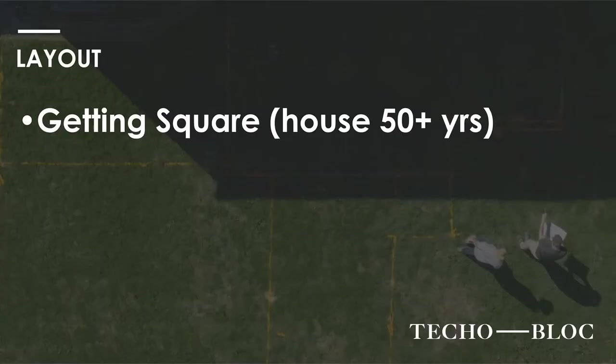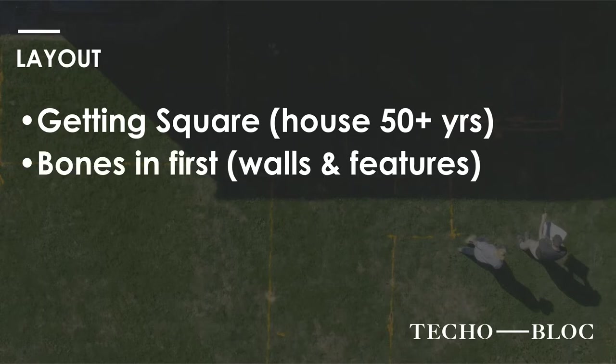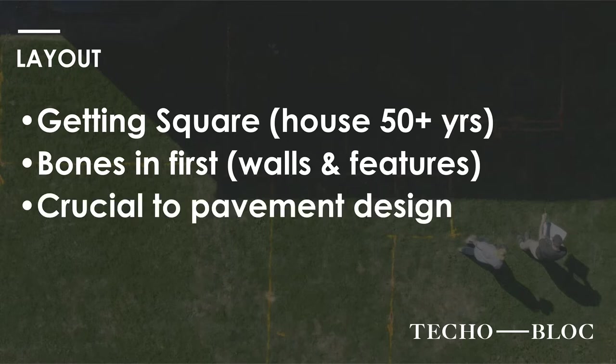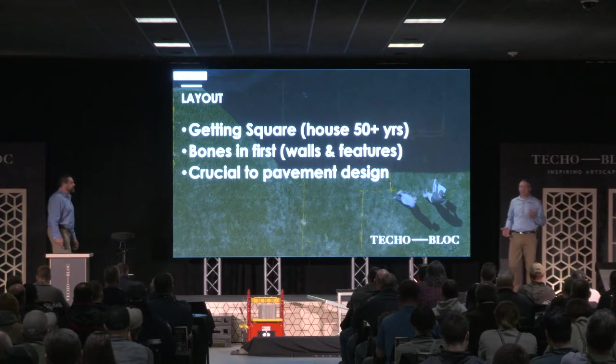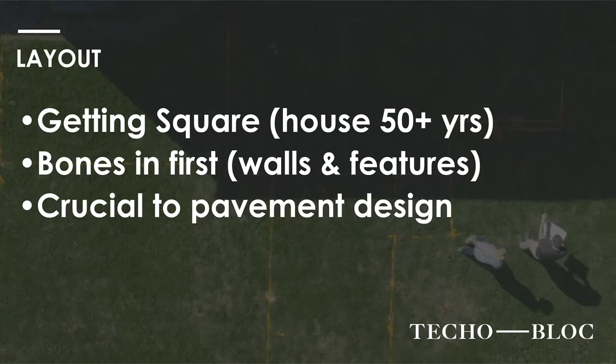Let's talk about layout. Luckily for us, every single house that builders put together is always perfectly square — especially after 50 years of roots. Bones in first: we always build from the lowest grade point up. All our walls and features go in first. It's crucial to that pavement design — you're going to see pre-planned half cuts with our Hexa product. If we throw off the layout, it's not going to go in right.